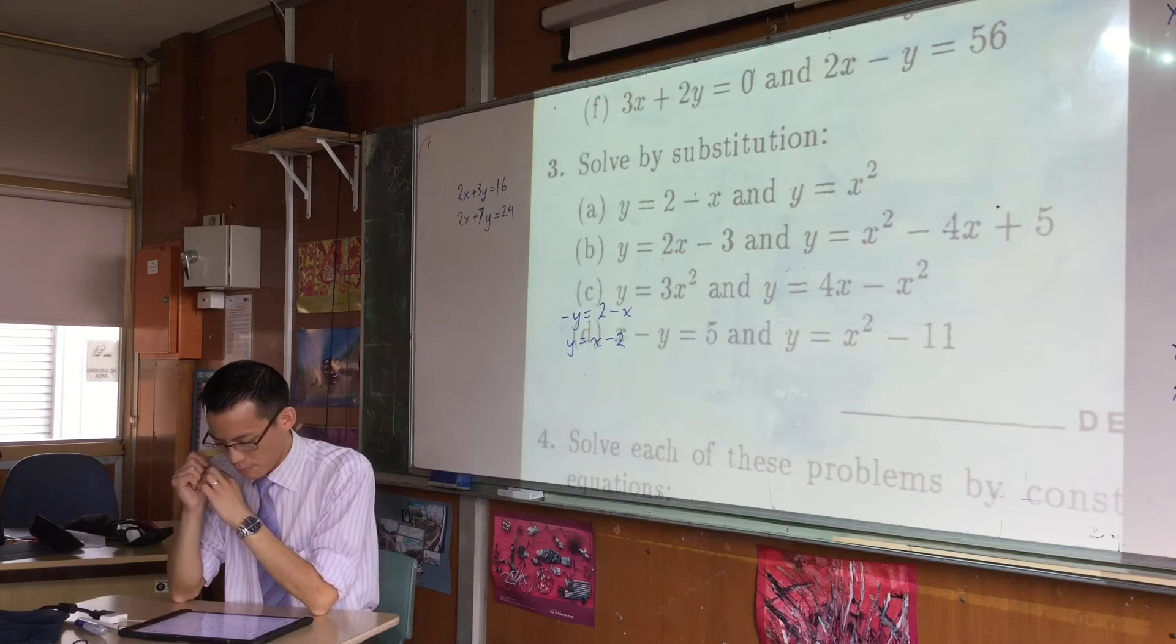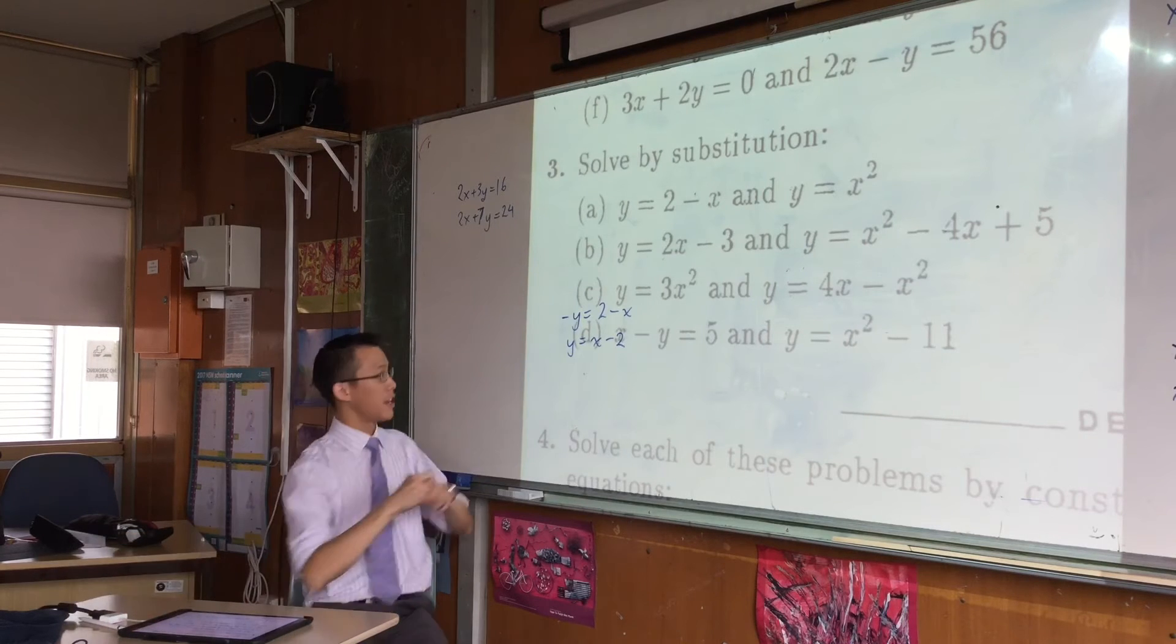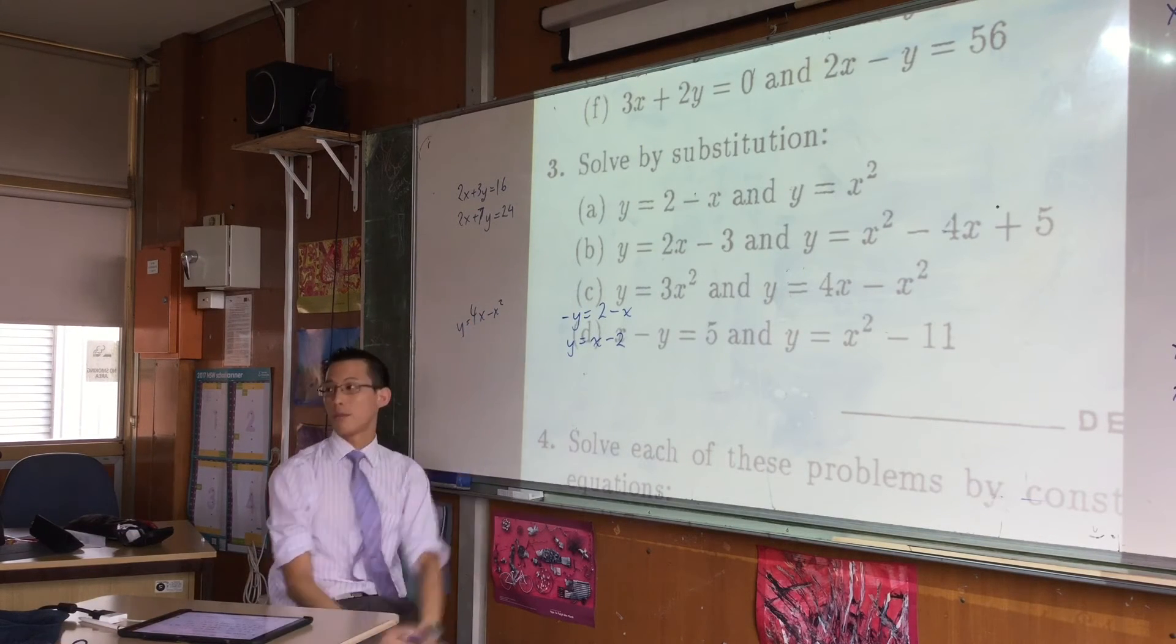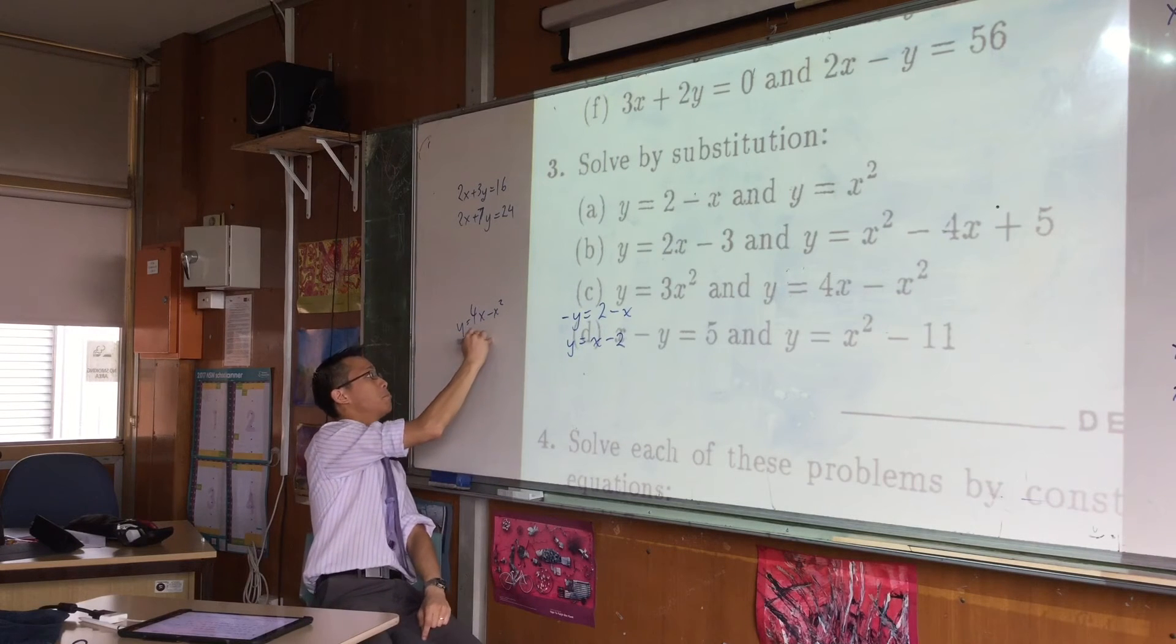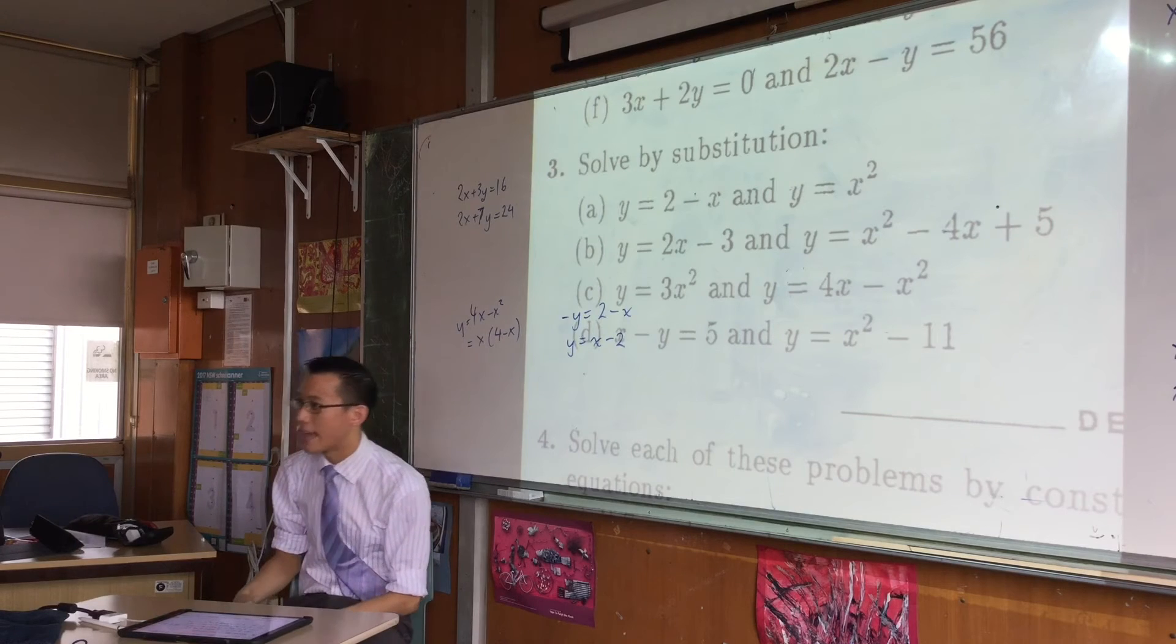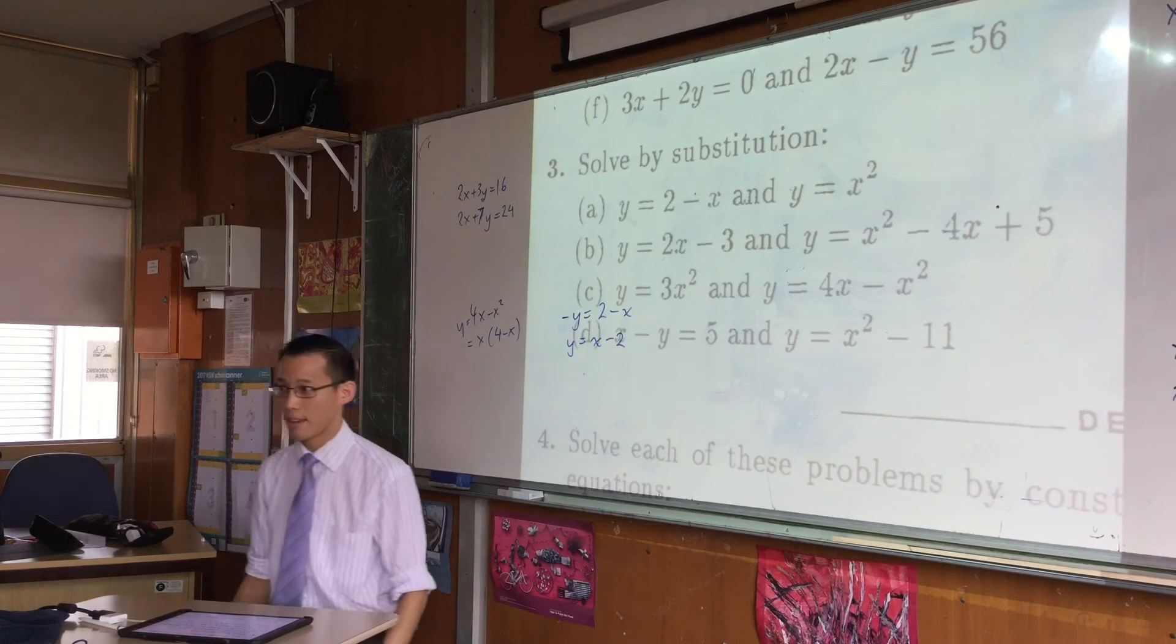4x minus x squared, that's a little bit trickier, but you can factorize that fairly straightforward in your head. 4x minus x squared, what's the common factor? Do you have a picture for that in your head? Even just a rough one.